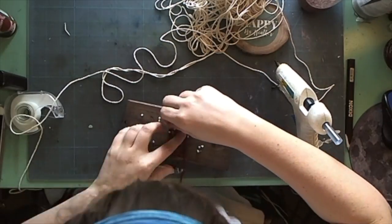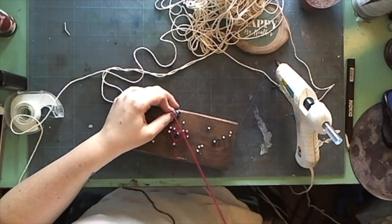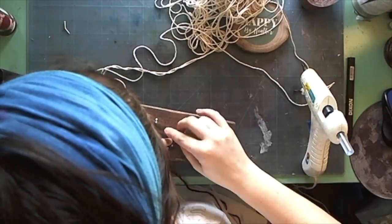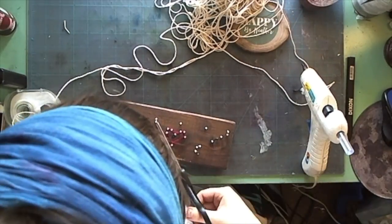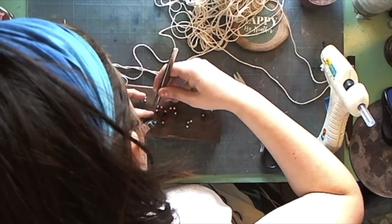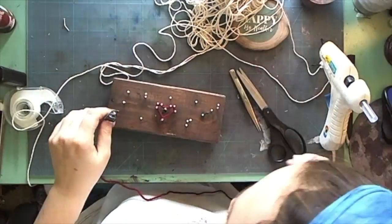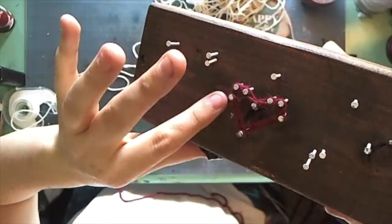When I've reached the end of this part of my design, I'm gonna add another dab of hot glue and then wrap this string around that one nail a couple times and cut it off. This is also where the tweezers come in handy. They help to kind of seal that last bit of string so it doesn't fray.